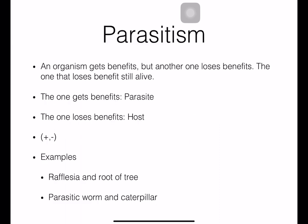Parasitism is the situation where one organism gets benefits, but the other organism — the one that loses benefit — is still alive and not dead immediately. However, later it may die because it gets starved or lacks food. The one that gets benefit we call the parasite, and the one that loses benefit we call the host.